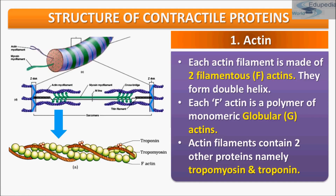A complex protein called troponin is distributed at regular intervals on the tropomyosin. It is present here, and after some distance it is present again, and then again. In the resting stage, a subunit of troponin masks the active binding site for myosin on the actin filament.